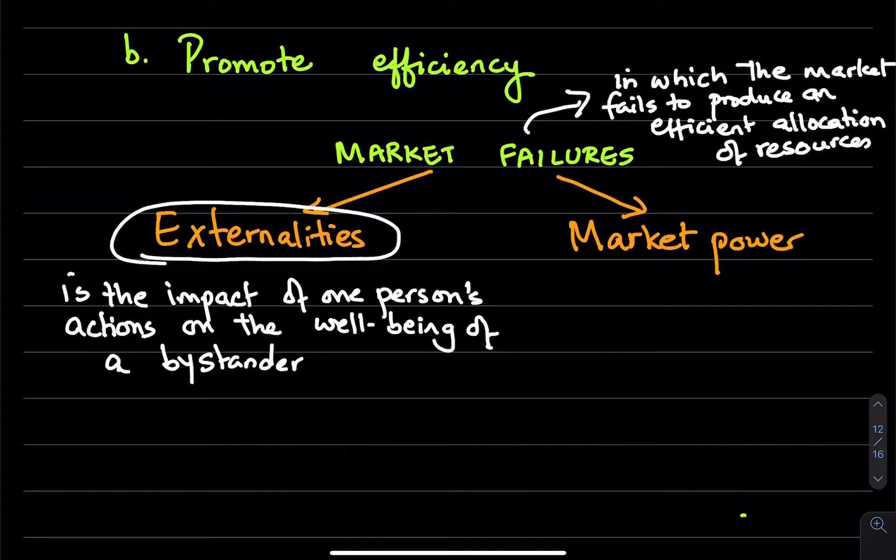So an example of a positive externality is when you have a very studious roommate and that roommate might encourage you to study. So you do well in class. And so that's an example of a positive externality. But a negative externality could be when you have a roommate who is being fidgety or is playing loud music and that could impact you, even though you're not trying to participate in any activity that they're doing, they are affecting you or your performance.